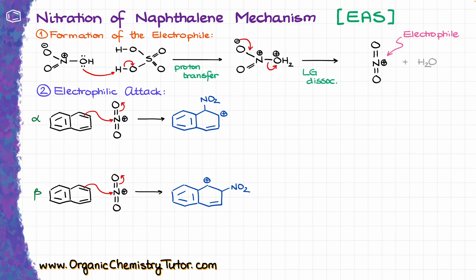Since we have two possible positions for the attack, I'm going to show both intermediates here. This is going to be my intermediate for the alpha attack, and this one is going to be the intermediate for the attack at the beta position. Now, the fun part, like in any electrophilic aromatic substitution reaction, is of course the resonance. The bigger the molecule, the more resonance structures we are going to have. Aromatic chemistry is pretty much all about resonance, so if you feel a little rusty on this subject, it might be time to do some review. I'll leave links to my bonding and resonance videos in the description below.